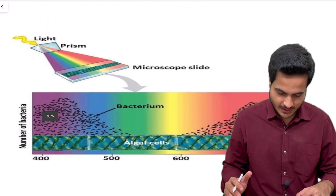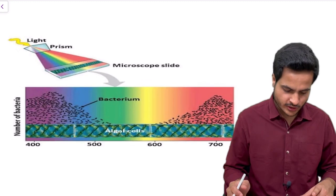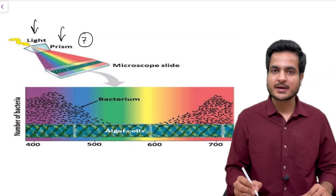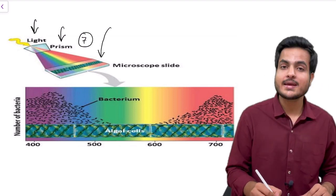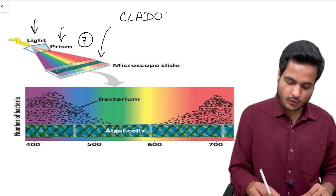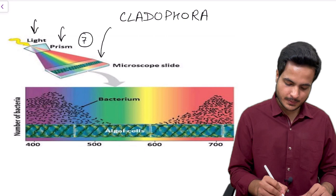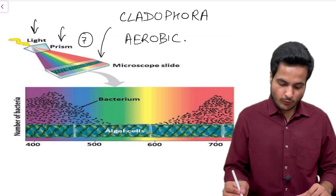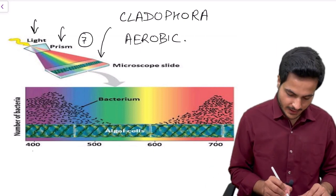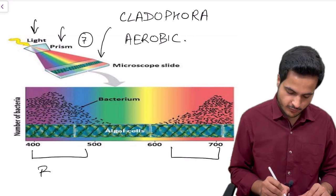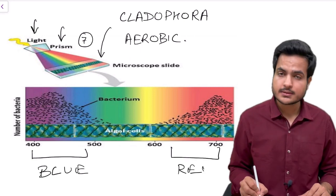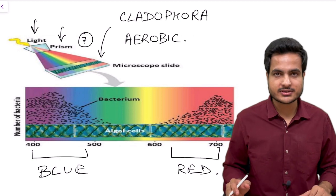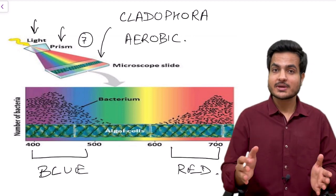Now let's see his experiment through this diagram. Light is split by a glass prism into seven colors, that is its spectrum, and it is illuminating a green algae called as Cladophora. This Cladophora is placed on this slide containing aerobic bacteria. And now when we see the spectrum, we could see that the bacteria are more in the region of blue and red light. This means photosynthesis is at maximum speed in blue and red light region. So this was all about T.W. Engelmann's experiment.